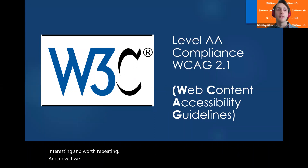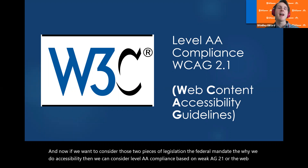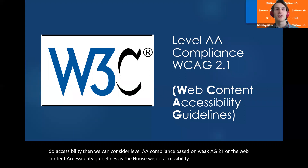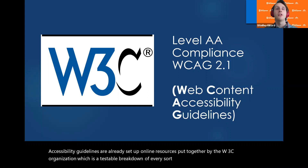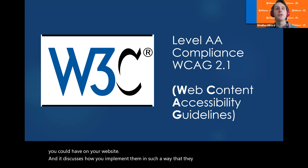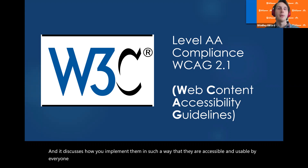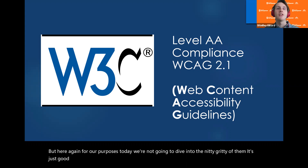If we consider those two pieces of legislation as the federal mandate — the why we do accessibility — then we can consider Level AA compliance based on WCAG 2.1, or the Web Content Accessibility Guidelines, as the how we do accessibility. WCAG is a set of online resources put together by the W3C organization — a testable breakdown of every sort of element, component, and feature you could have on your website, discussing how to implement them in an accessible and usable way for everyone, including those with disabilities. WCAG is the standard both in the US and across the globe for web accessibility.